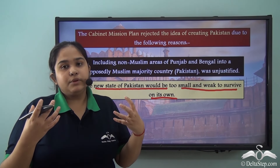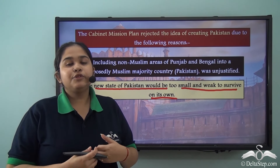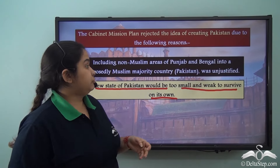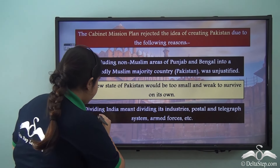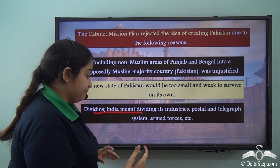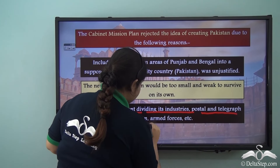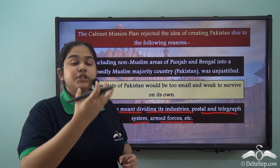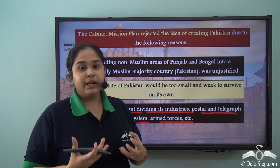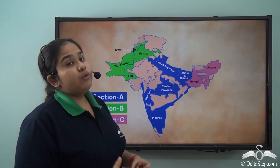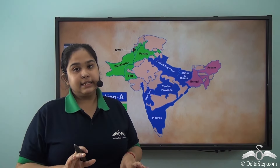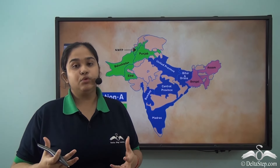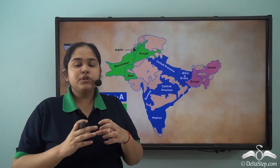The Cabinet Mission also stated that the new state of Pakistan would be too small or weak to survive on its own. India had established its resources and the Britishers had helped India establish a structure of political sense, but for Pakistan that would be absolutely new. So the small state of Pakistan would ultimately be very weak to constitutionally run itself. Furthermore, dividing India would mean dividing its industries, postal and telegraph system, armed forces, and other resources, which would in turn become a huge hassle.